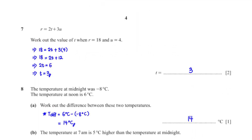R equals 2t plus 3u. Work out the value of t when r equals 18 and u equals 4. When we plug in r equals 18 and u equals 4, 3 times 4 is 12. When we subtract 12 from both sides, we get 2t equals 6. When we divide both sides by 2, we get t equals 3.